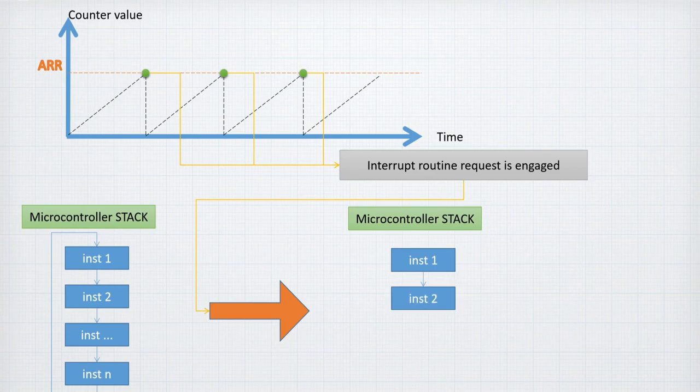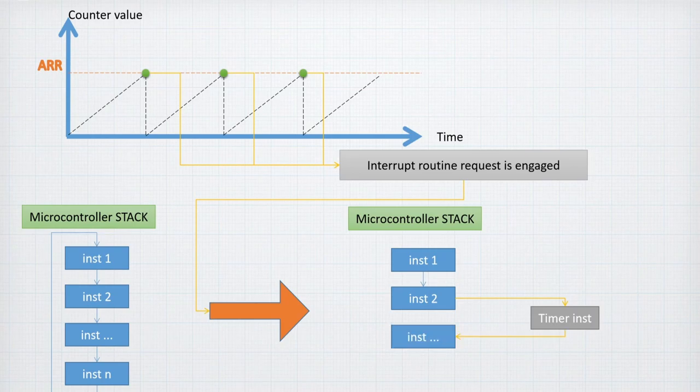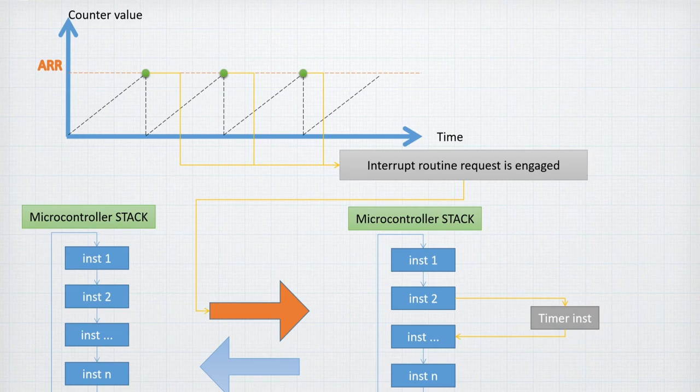When the interrupt happens, instead of going to the next instruction of the program, the microcontroller will go to the timer-related instruction and execute it. After executing that timely instruction, it goes back to the normal instruction and normal mode. That's how the timer interacts with the microcontroller when interrupts are activated.